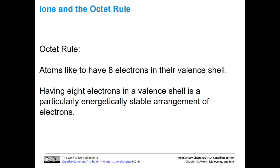An important concept is the octet rule, which says that atoms like to have eight electrons in their valence shell. When there are eight electrons in a valence shell, this is a particularly energetically stable arrangement of electrons, and it happens to match the nearest noble gas. That noble gas arrangement is particularly stable, so other atoms want it too, and they achieve it by forming ions.